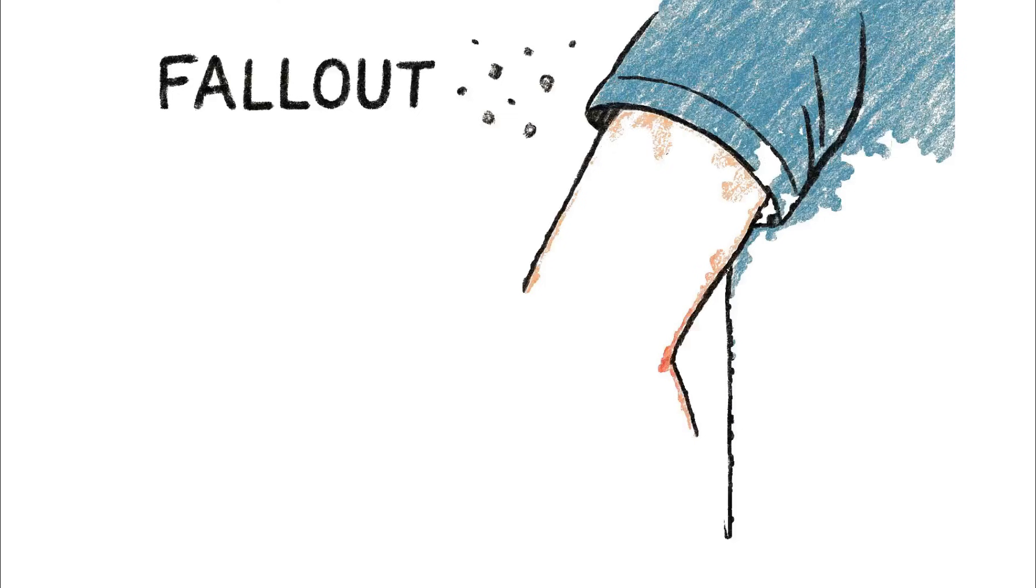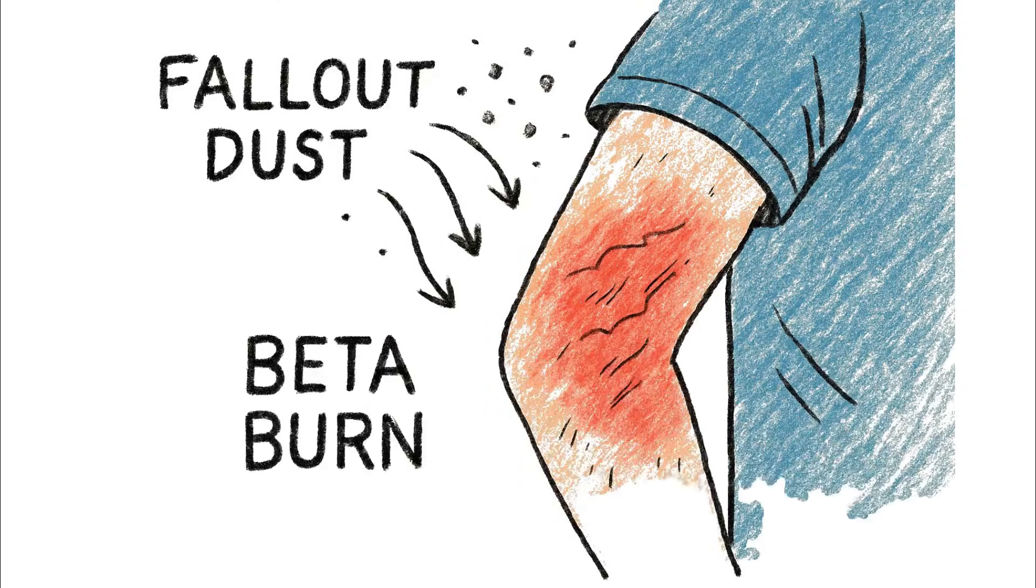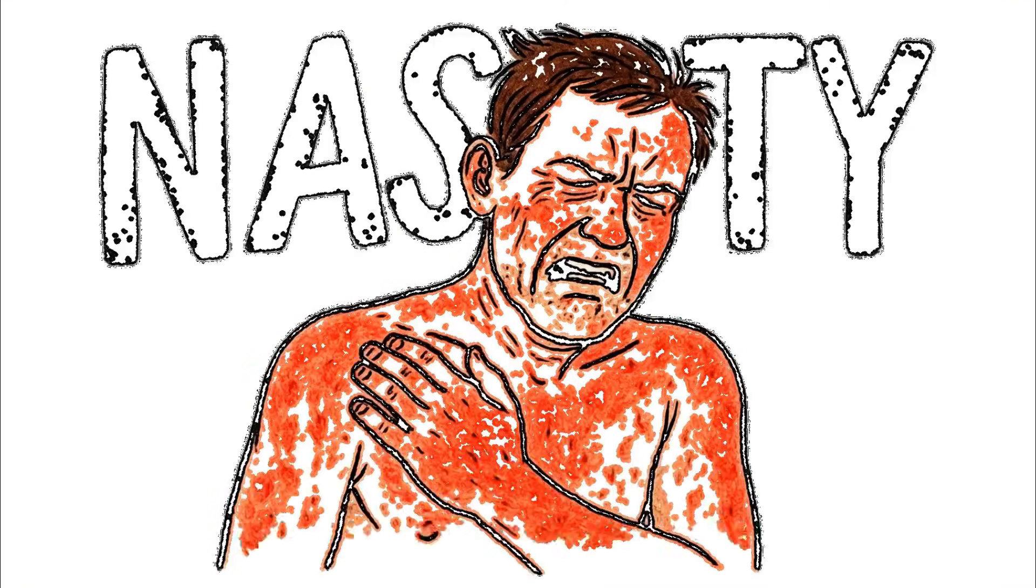If fallout dust lands on your exposed skin, the beta particles it emits can penetrate the top layer, causing what are known as beta burns. These are nasty, painful injuries, very similar to a severe sunburn.